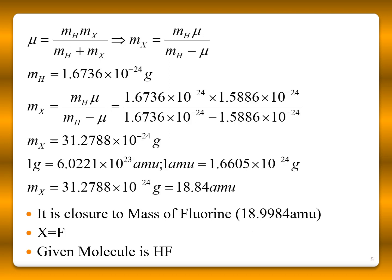You know the value of mu and also you know the value of mass of the hydrogen, that is 1.6736 times 10 to the power minus 24 grams. If you substitute this mX, the mass of the unknown value is equal to mH mu divided by mH minus mu.